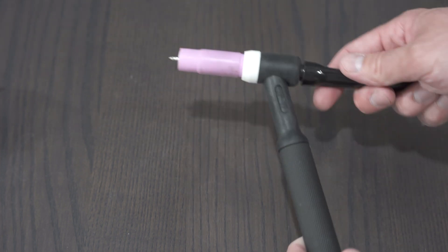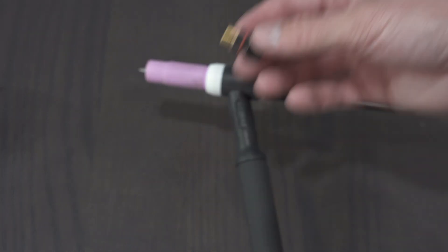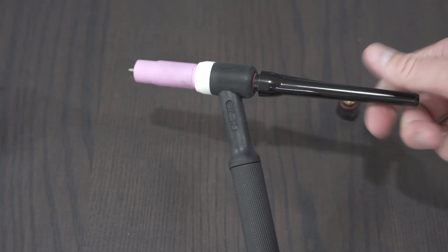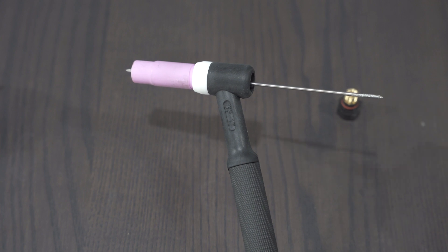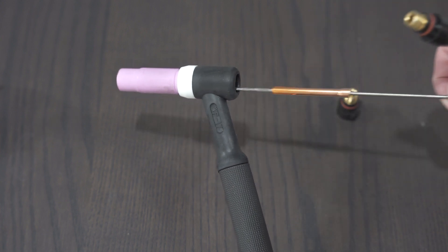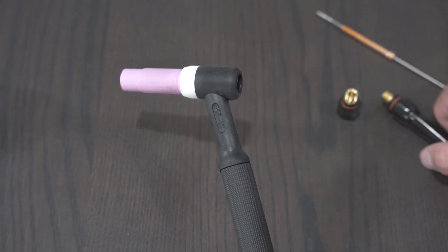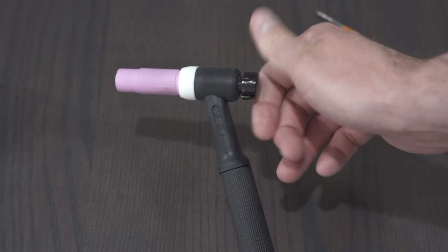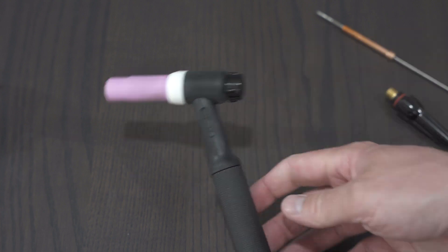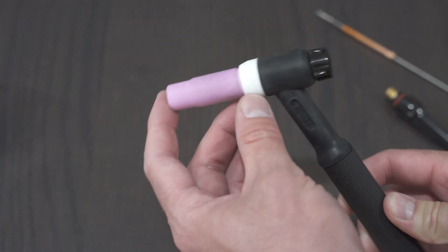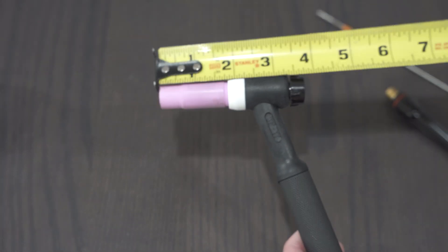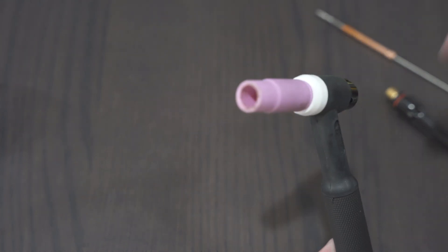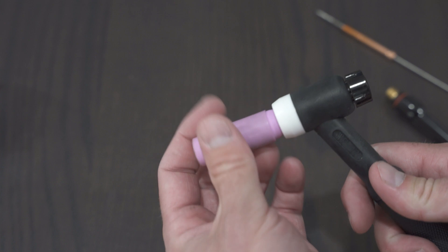Most TIG torches will come with a small back cap. You can remove this back cap just like this. You can just pop it off and if you remove the tungsten and put a smaller tungsten in, you can run a shorter back cap and a small tungsten but you're still left with the fairly long, little over inch and three quarter, just typical alumina cups.